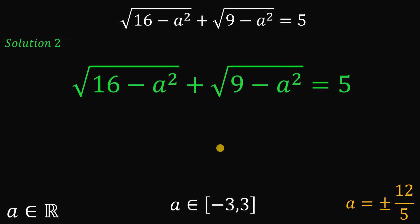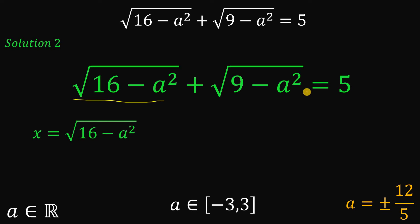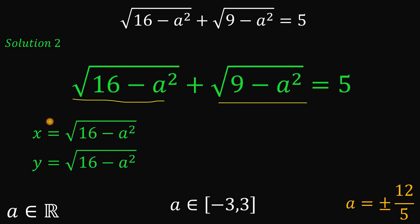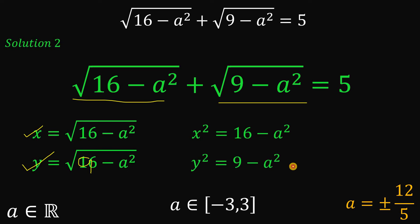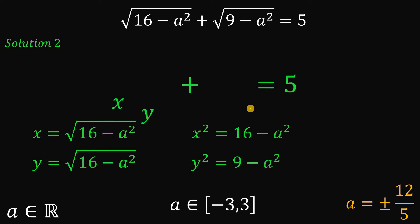For our second solution, we introduce another variable. Let X equal the square root of 16 minus A squared, and let Y equal the square root of 9 minus A squared. Squaring the first equation gives X squared equals 16 minus A squared, and squaring the second gives Y squared equals 9 minus A squared. Our original equation then becomes X plus Y equals 5.